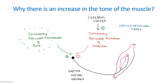What happens when there is a lesion in the corticospinal tract? The influence of the cerebral cortex will not occur. So the inhibitory reticular formation will not be able to do its work — it will not be able to inhibit the gamma motor neuron. There will be continuous stimulation by the excitatory reticular formation of the pons, causing continuous gamma efferent discharge. When there is continuous gamma efferent discharge, the tone will increase. That is why in pyramidal tract lesions you see increased tone as well as hyperreflexia.